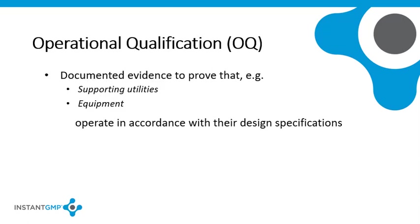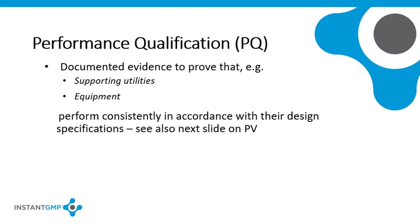A Performance Qualification (PQ) documents evidence that supporting utilities such as water systems, air handling systems, gas supply, compressed air, and equipment are consistently performing in accordance with GMP and their specifications, usually over a period of time.